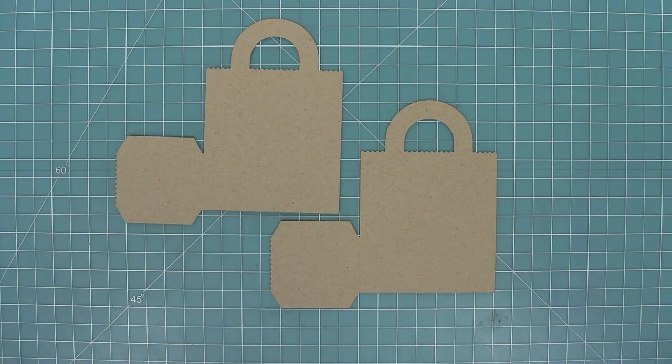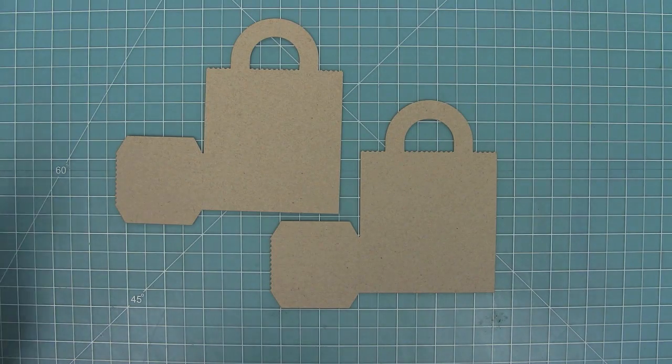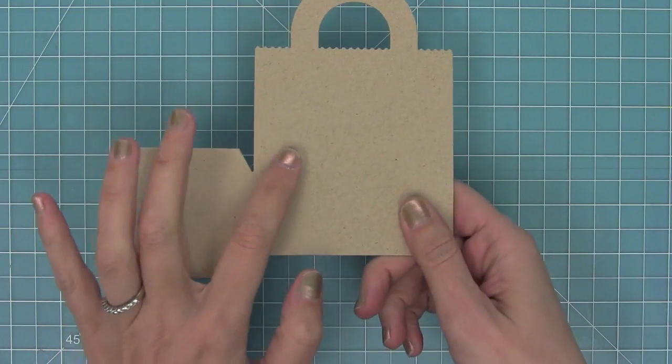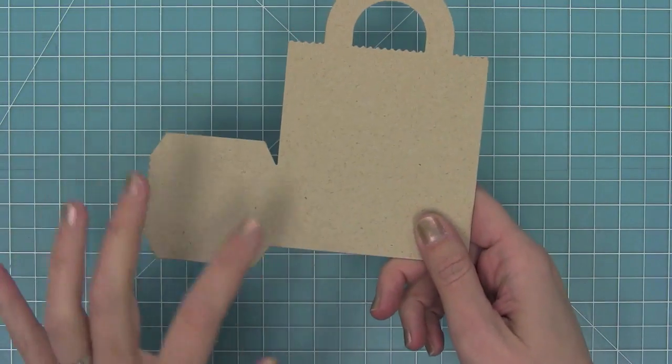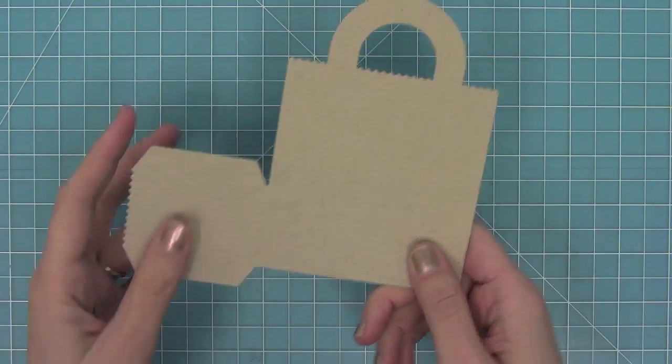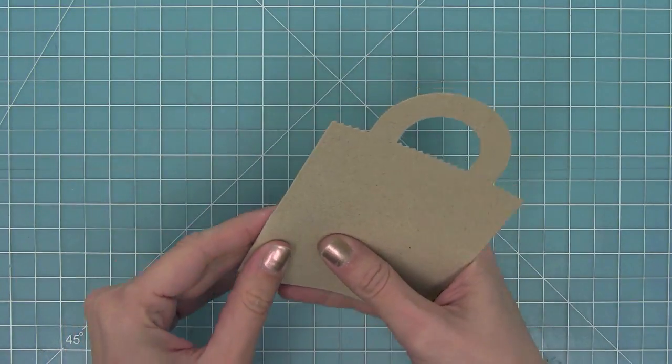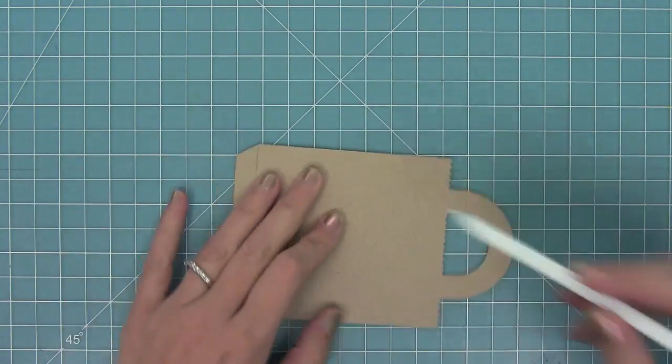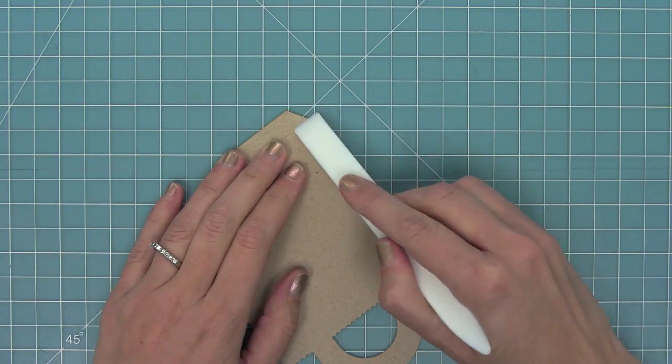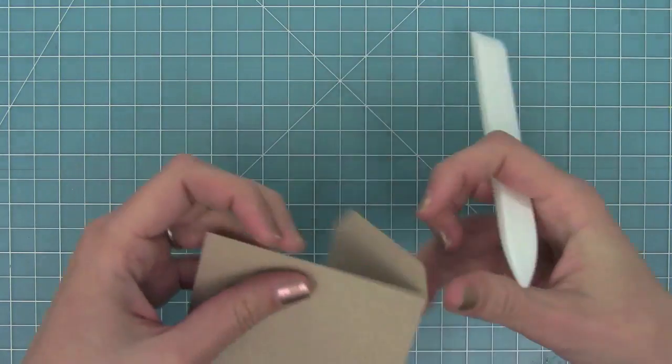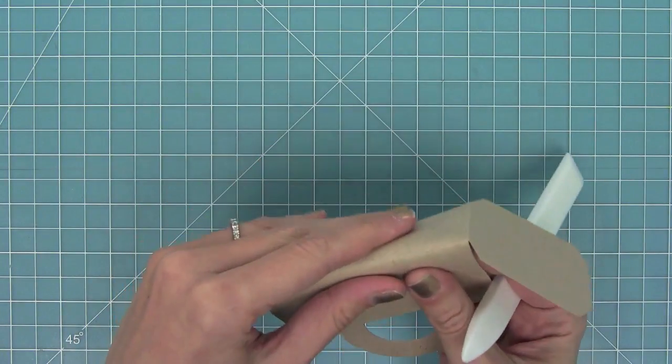Here you can see my two pieces are ready to go, and now it's time to fold along those score lines that the die did for you. We're going to fold along those four different lines. I like to fold right along there and then I like to take a bone folder and just crease that really well. The sharper these edges are, the better the bag is going to look.